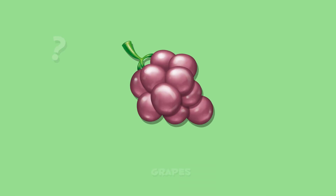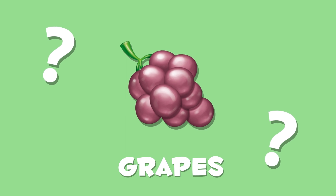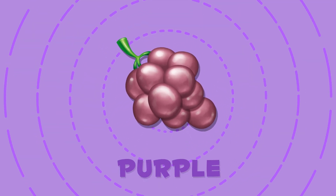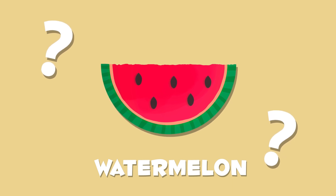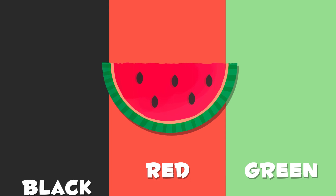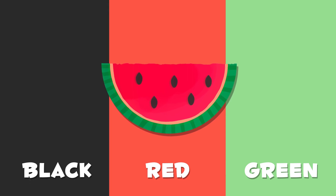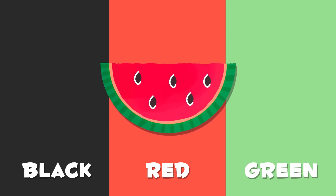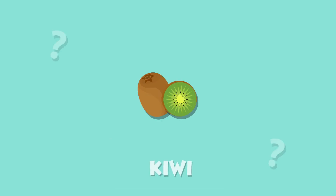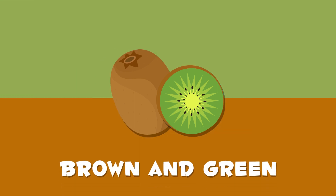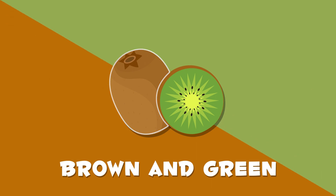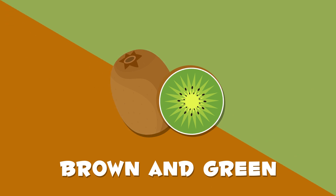And here are the grapes. What color are the grapes? Purple. The grapes are purple — there are also green ones. Here we can see a watermelon. How many colors do you see? Green, red, and black. The outside is green, the inside is red, and the seeds are black. Look — a kiwi! The peel is brown and on the inside it's green. Kiwis are so delicious!